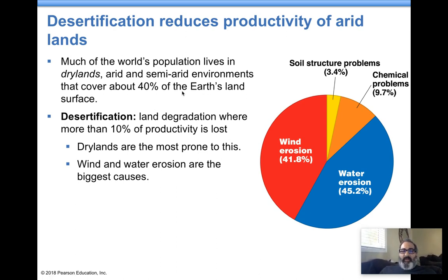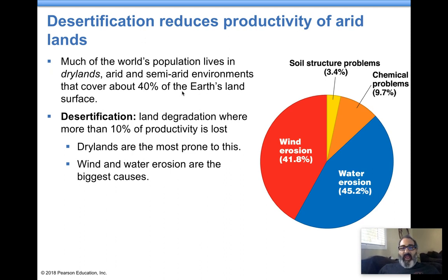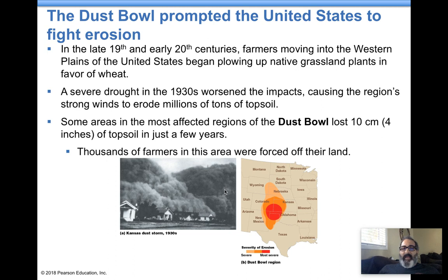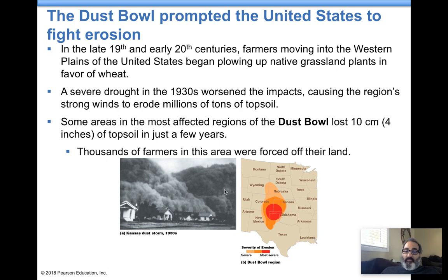Desertification occurs when an area becomes more desert-like. In dry areas, you have a lot of erosion, salinization, and land degradation. When you lose more than 10% of the area, desertification takes place. Drier climates are most prone. The dust bowl — in the late 19th and early 20th century, people started moving out west, there was overgrazing, and a severe drought took place. The area got extremely dry and they lost about four inches of topsoil in just a few years, which forced farmers to leave.